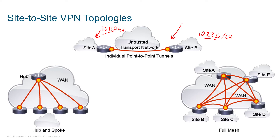What we effectively do is build policies on both sides that say: when you see traffic coming from 10.1.1.0 going to 10.2.2.0, wrap it up, encrypt it, protect it, and send it to the public interface of the other side. And at the other side, when you see traffic from 10.2.2.0 trying to get to 10.1.1.0, encrypt it and send it to the outside of the other site, pointing to that public IP address. So we tend to have static public IPs on the outside, private networks internally, and we provide access between the two networks.